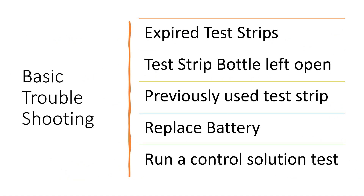Some basic troubleshooting to keep in mind when you are having issues with your blood glucose meter: ensure that you're not using expired test strips, and ensure that the test strip bottle has not been left open, exposing the test strips to an extended period of time to oxygen, which can cause the test strips to not work properly.